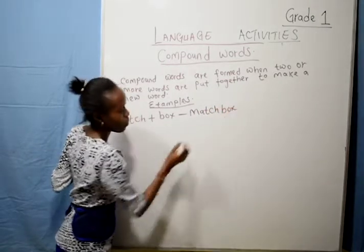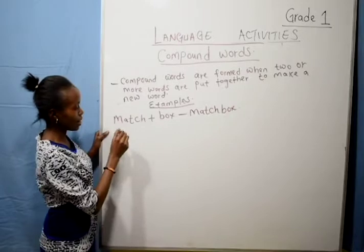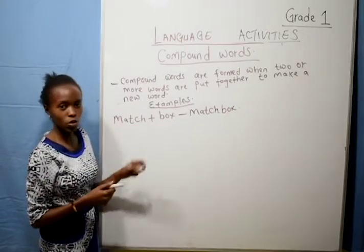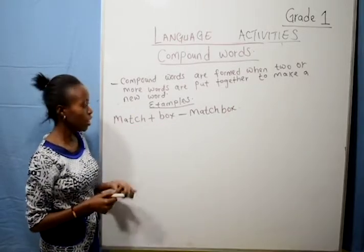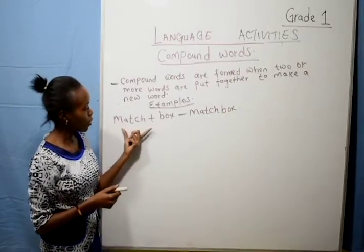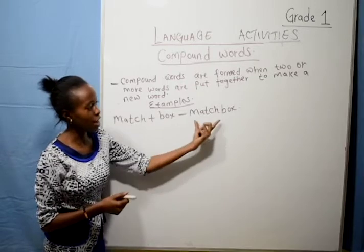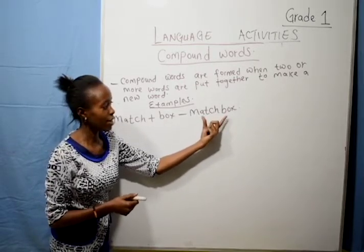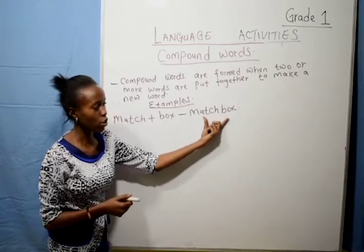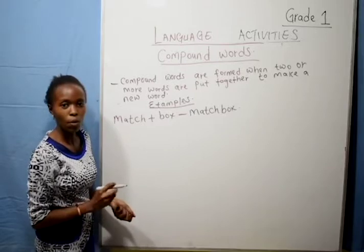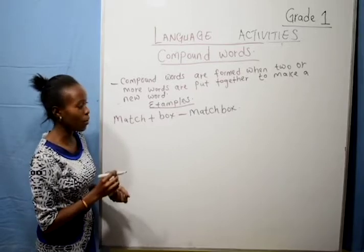Match, box — matchbox. Match is a new one, and box is also a new one. So when we put them together, they give us a new one. They give us matchbox, which is a compound one.